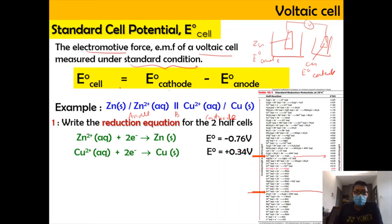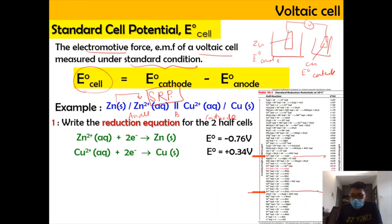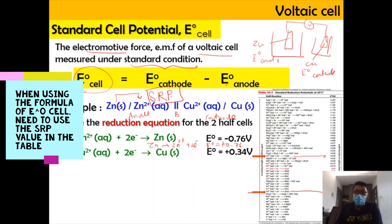To use the formula, both values must come from the SRP table in their reduction form — even if the zinc half-cell undergoes oxidation in the cell. Do not change the sign manually; the formula E⁰cell = E⁰cathode − E⁰anode accounts for the sign automatically.